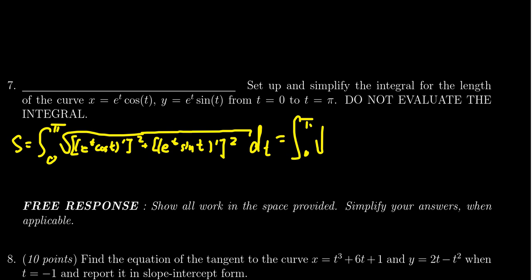By the product rule, you're going to get two terms. The derivative of e to the t is itself, so you get e to the t cosine of t. Then when you take the derivative of cosine, you get a negative sine, so you get negative e to the t sine of t. We have to square both of these things.